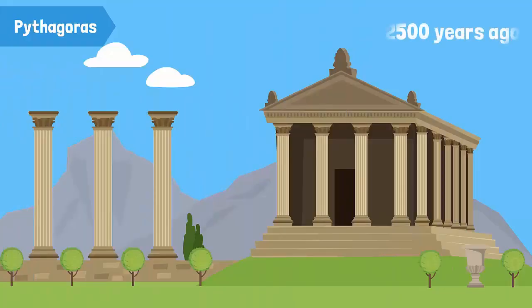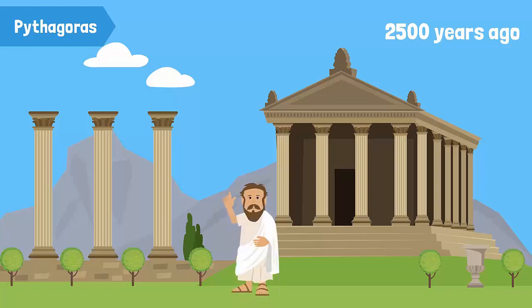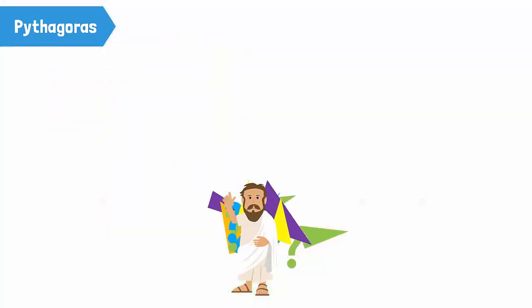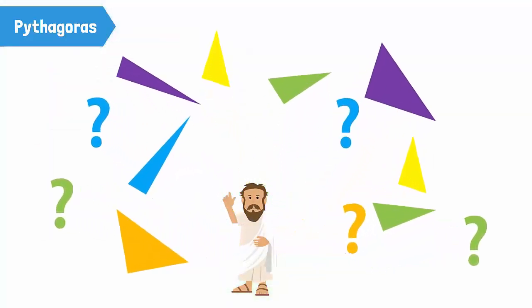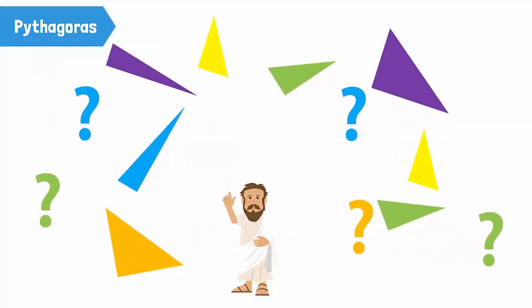2,500 years ago, there was a Greek mathematician whose name was Pythagoras. Pythagoras was fascinated by right angle triangles and wanted to find out all about them.